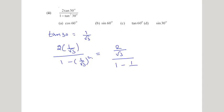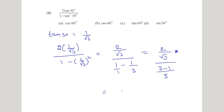This becomes (2/√3) divided by (1 - 1/3). Since 1/√3 squared is 1/3, the denominator is 1 - 1/3 = 2/3. So we have (2/√3) multiplied by the reciprocal (3/2). The 2s cancel, giving us 3/√3.